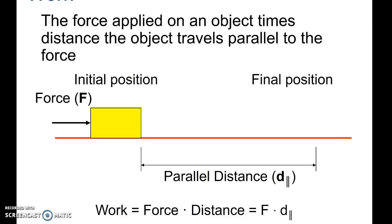We define work as the amount of force that we apply times the distance that the object is traveling. But in order to have work, the force being applied has to be parallel to the distance the object is traveling. If the distance the object travels is perpendicular, then we do not have work. We also don't have work if the object is not moving — so if I push against a wall and the wall doesn't move, I'm applying force but I do not have work.